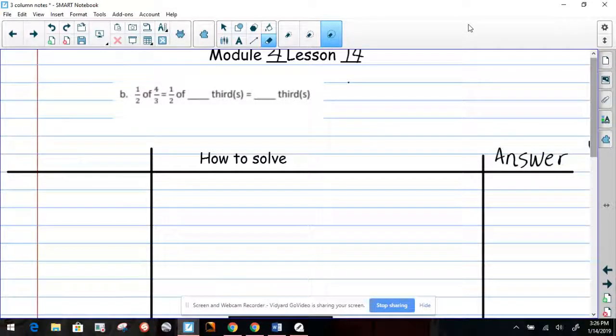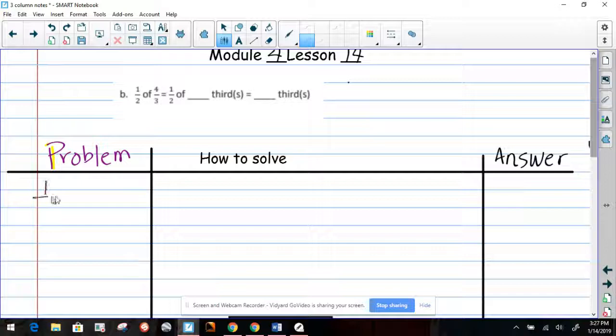Hello my friends, welcome back to my third part of Module 4, Lesson 14. Again on this problem, let me use a brighter color. We're going to look at one half of four thirds.